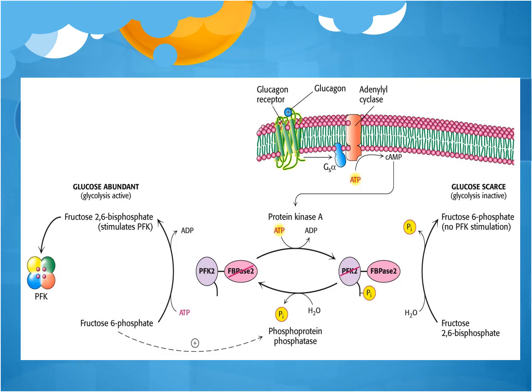Glucagon will bind to the glucagon receptor, which is a G-protein coupled receptor. The alpha subunit of this protein will activate adenylate cyclase, which will convert ATP into cyclic AMP. Cyclic AMP will activate protein kinase A, which will phosphorylate PFK2 but leave fructose bisphosphatase 2 active. This fructose bisphosphatase 2 will convert fructose 2,6-bisphosphate to fructose 6-phosphate, which will reduce the activation of glycolysis, so we won't be breaking down as much glucose in our body.